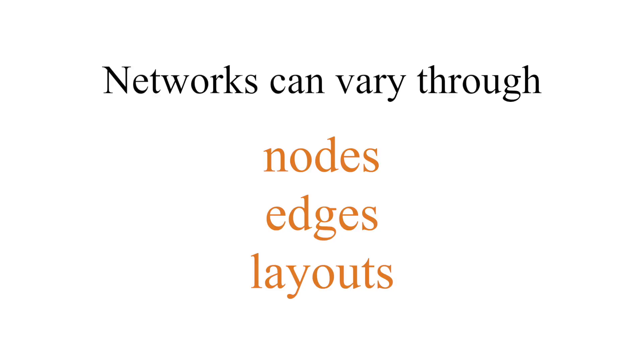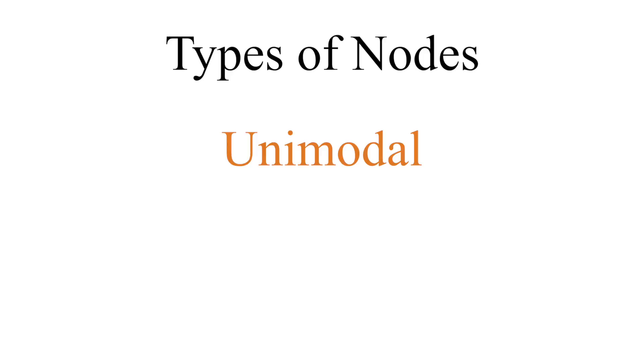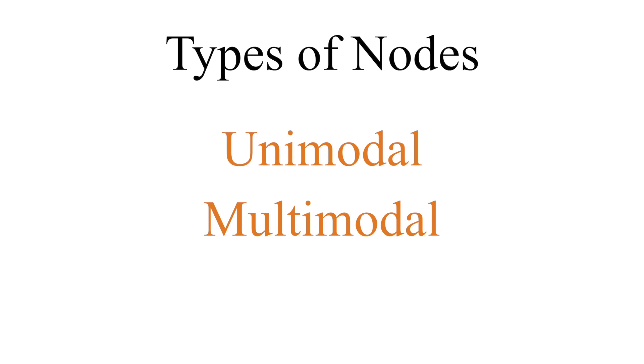So first we're going to think about the nodes or vertices. Networks can vary in various ways — with respect to the nodes, the edges, and the layouts they have. When it comes to differences in terms of nodes, networks have two major types: unimodal and multimodal.